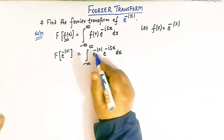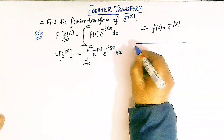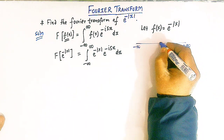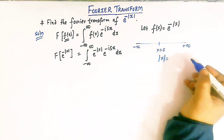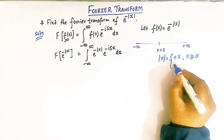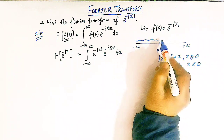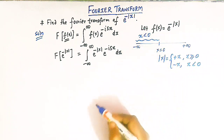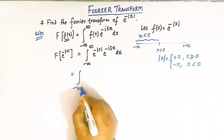Now viewers, here we have the mod function and the limits go from minus infinity to infinity. So here we have minus infinity, plus infinity, and x equal to zero. To evaluate this integral we have to make use of the definition of the mod function. The mod of x equals positive x whenever x is greater than or equal to zero, and negative x whenever x is less than zero. So when we go from minus infinity to zero, all values of x are less than zero.